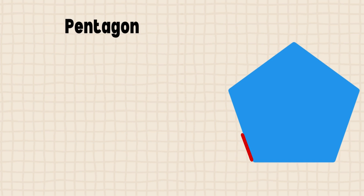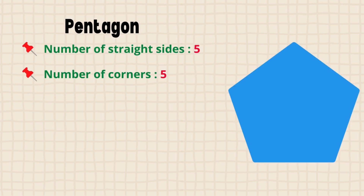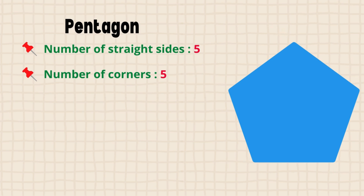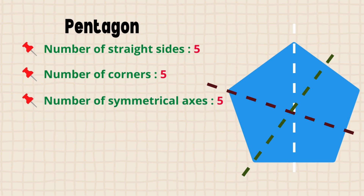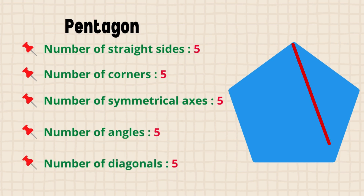This is a pentagon. A pentagon has five straight sides, five corners, five symmetrical axes, five angles, and five diagonals.